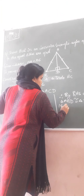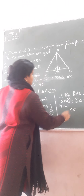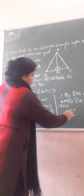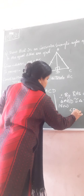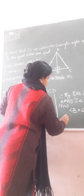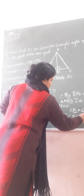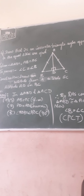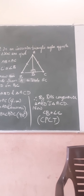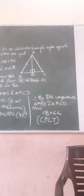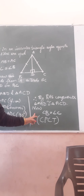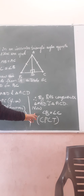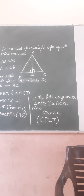Now, angle B will be equal to angle C. By CPCT — corresponding parts of congruent triangles — these two angles will be equal, which is what we had to prove. Angle B is equal to angle C, proved by CPCT.